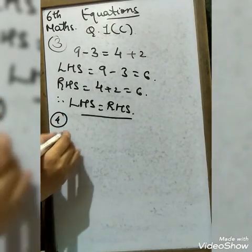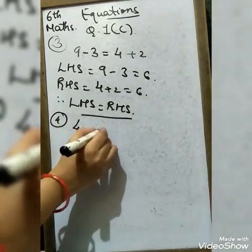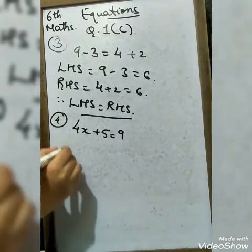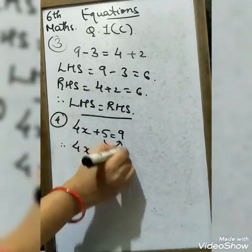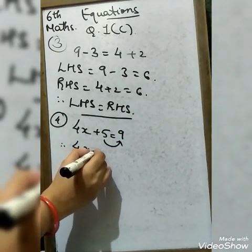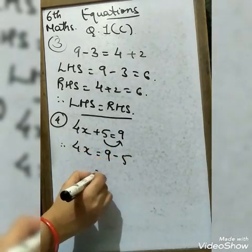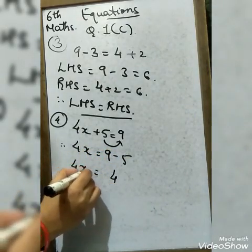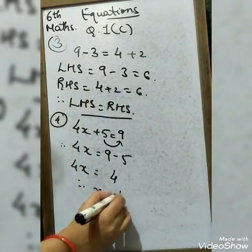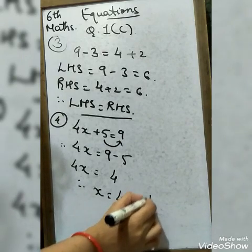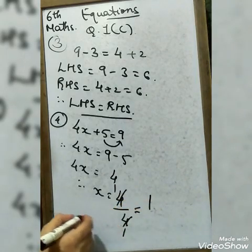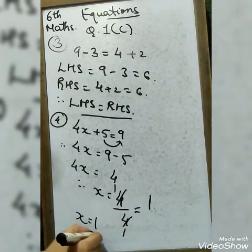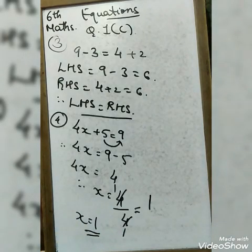The fourth entry is: 4x + 5 = 9. Solving: 4x = 9 − 5 = 4, so x = 4 ÷ 4 = 1. Therefore x = 1. This is an equation, so we tick mark in the equation column and not in the equality column.